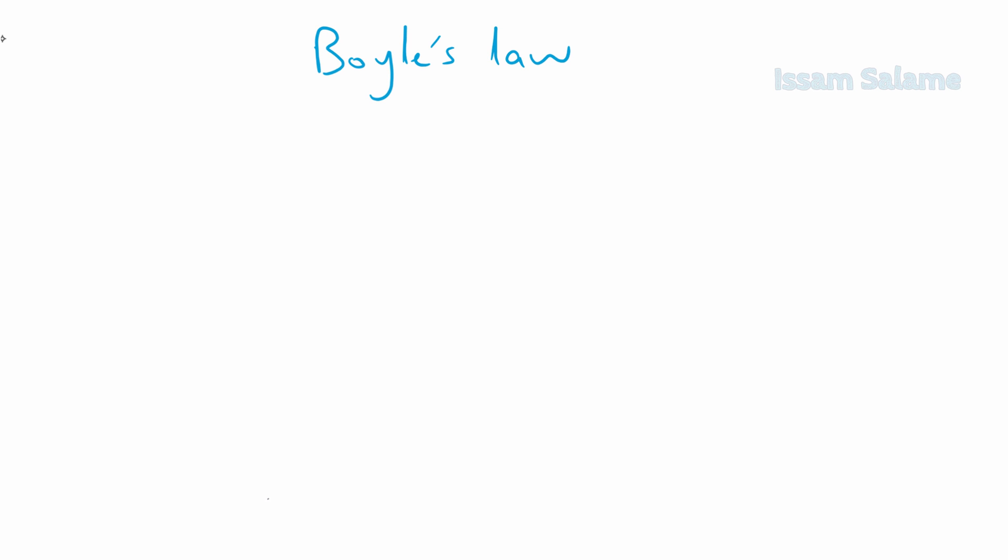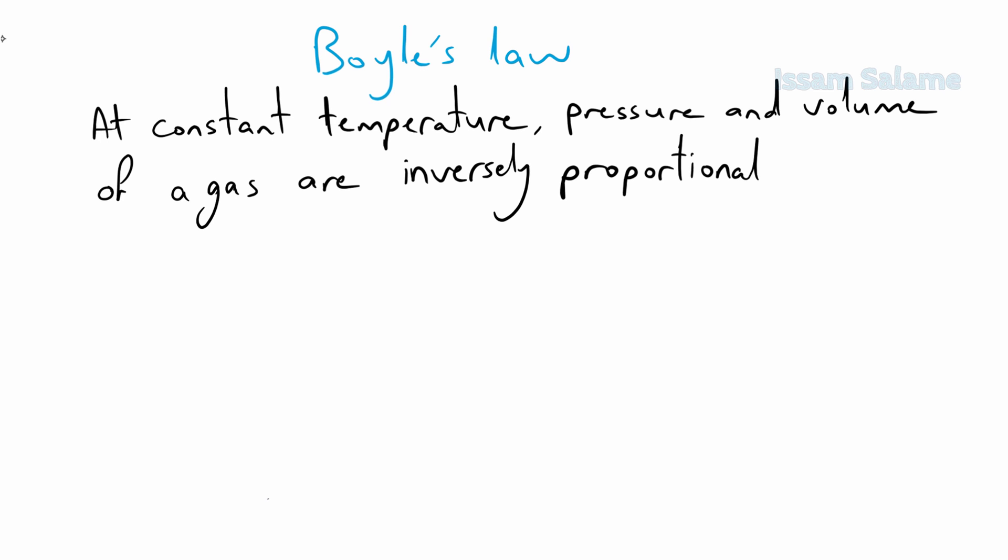Boyle's Law states that at constant temperature, pressure and volume of a gas are inversely proportional, which means that as pressure increases, volume will decrease, and as pressure decreases, volume will increase.